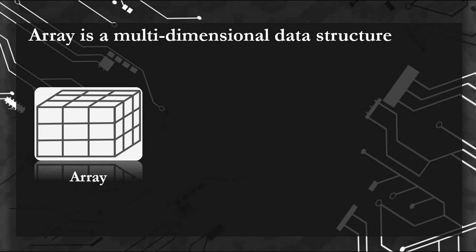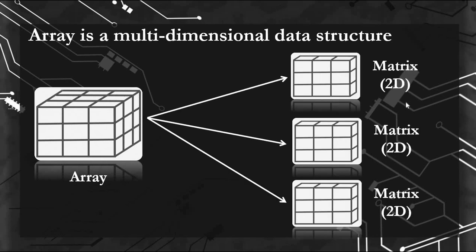Array is a multi-dimensional data structure. In arrays, data is stored in form of rows, columns, and matrices. For example, in this array, we have three different matrices.